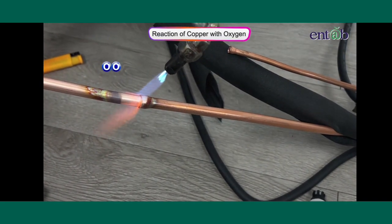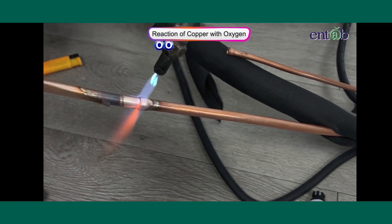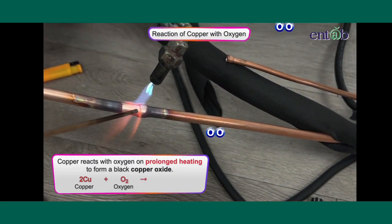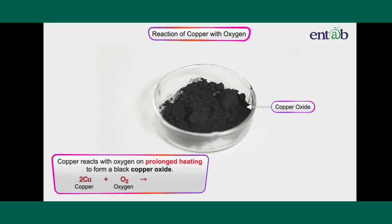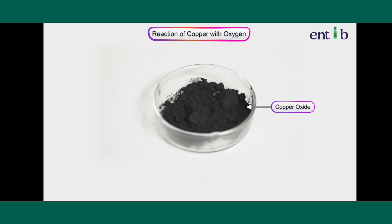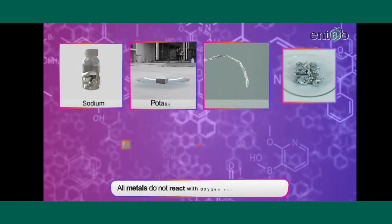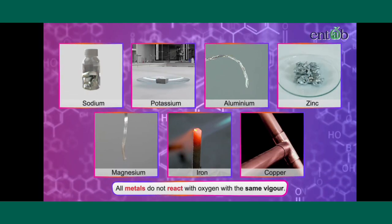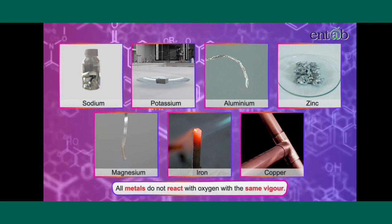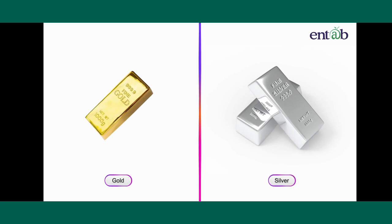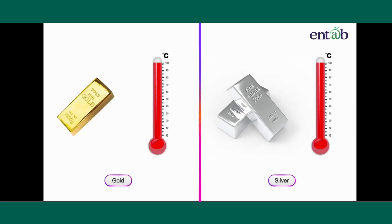Copper metal does not burn in air even on strong heating, but it reacts with oxygen on prolonged heating to form a black oxide — copper oxide, or cupric oxide. It is a less reactive metal compared to iron. All metals do not react with oxygen with the same vigor. Gold and silver do not react with oxygen even at high temperatures or on rigorous heating.